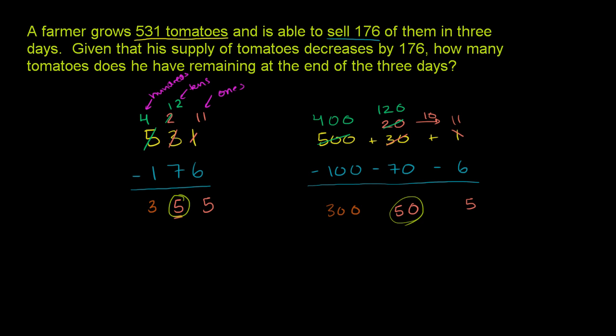We get 355. The farmer is left with 355 tomatoes at the end of 3 days, or 300 plus 50 plus 5 tomatoes.